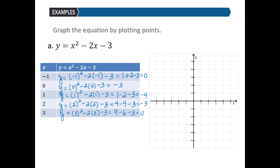So we have the ordered pairs (negative 1, 0), (0, negative 3), (1, negative 4), (2, negative 3), and (3, 0). This equation is a quadratic equation because of the exponent of 2, and its graph is a parabola. Connecting these points, we see the graph goes down to the bottommost point of (1, negative 4) and then turns back up — a parabola.